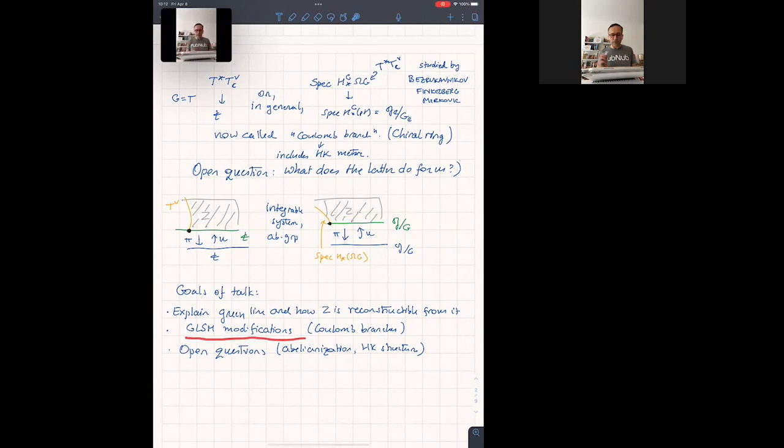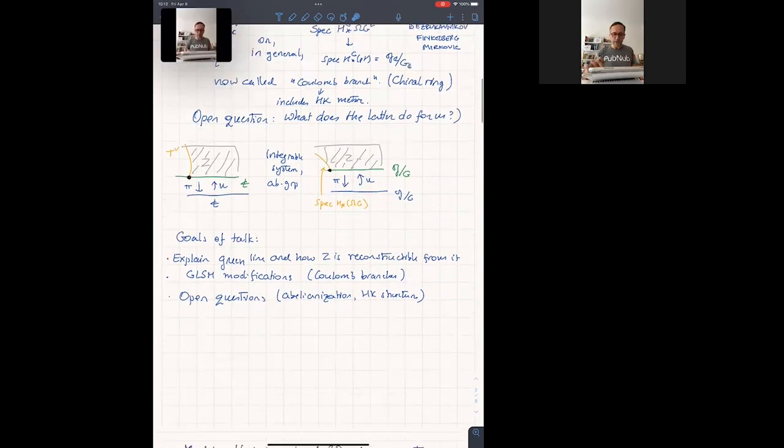And then I want to say how you can change it to get the Coulomb branches with representation by adding what physicists have been telling us about gauge linear sigma model for a long time. And I probably won't have time for the open question in my sense, based on where we are.